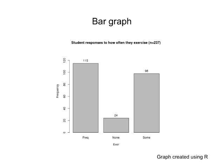The weaknesses: the title isn't very explanatory. The labeling on the x-axis is very weak — it shows 'Exer,' which is the variable name from the data set, and 'Freq' instead of writing out 'exercise' and 'frequently.' But I think the biggest weakness is the order of the bars. Notice the order is alphabetical — F, N, S, left to right — which doesn't really help us think about what's going on. It would be much better if organized in a different order, like frequently, some, none.